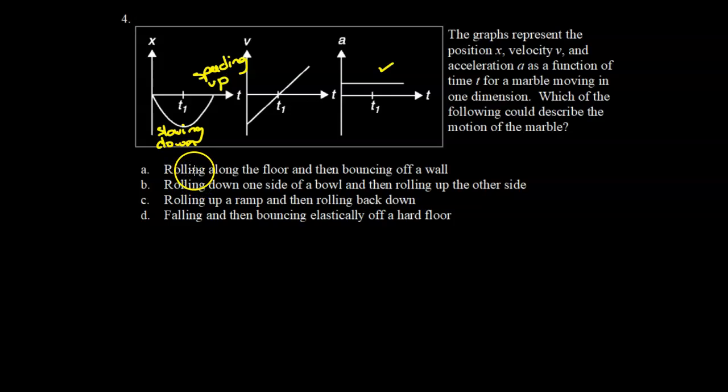Now, my choices are A, rolling along the floor and then bouncing off. So this bouncing off is going to change the acceleration. B, rolling down one side of the ball and then rolling up the other side. Once again, the acceleration will be changing. So it's not going to be A or B. Rolling up a ramp and then rolling back down. And so this definitely can be the answer. So as the ball is initially going up, it's going to slow down. And then it's going to reverse direction and speed up. D, falling and then bouncing elastically off a hard floor, the acceleration will be changing. So it can't be that one. So the answer for this one is going to be C.